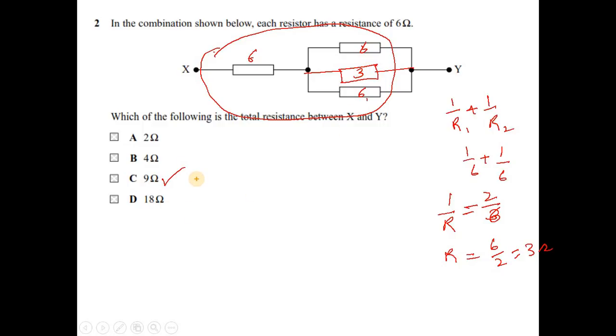Or remember if you have two equal resistors, R and R in parallel, the equivalent resistance will be R by 2. So if this is 6 and 6, you don't need to spend all this working. Their equivalent resistance should be half of 6 which is 3, and you can save your time here.